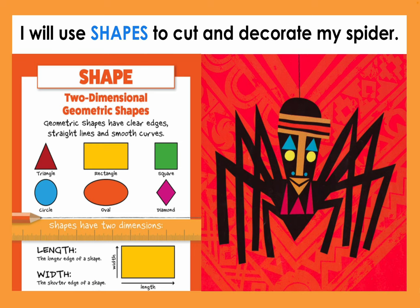I will use shapes to cut and decorate my spider. The spider's body is an oval or a teardrop shape for the head, a triangle for the body, and then on the face of the spider there are rectangles, circles, and triangles. Shapes are flat, two-dimensional shapes that have a length and a width.